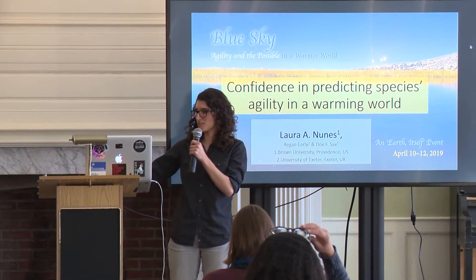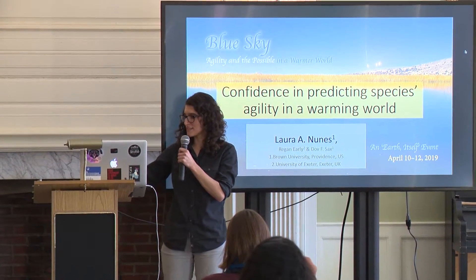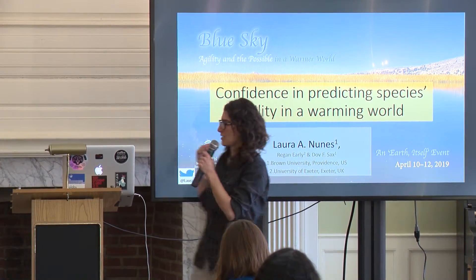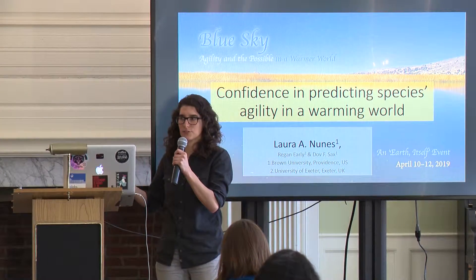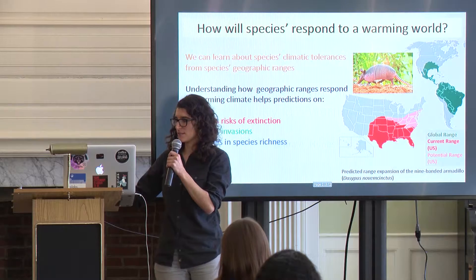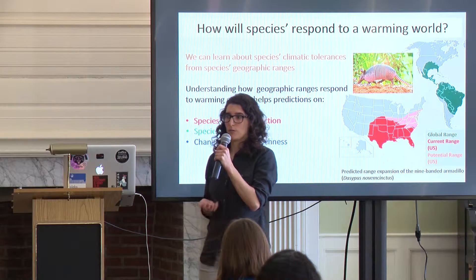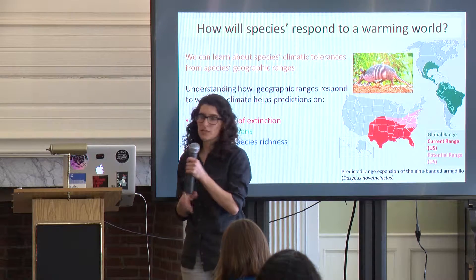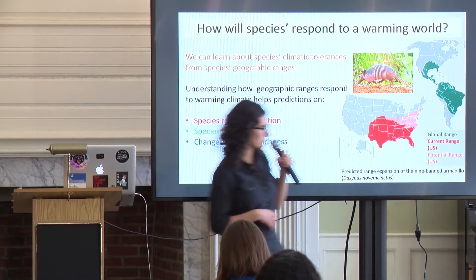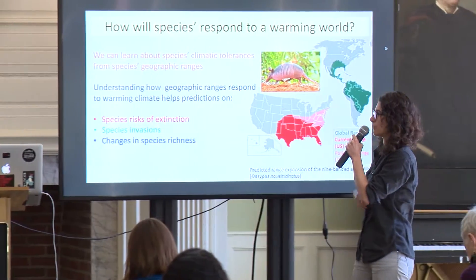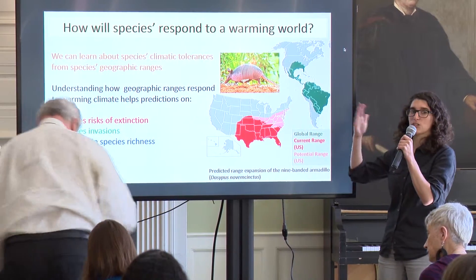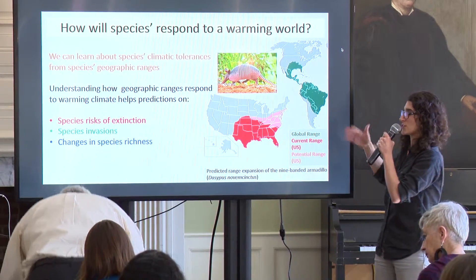I'm Laura and I'm a postdoc with Dove Sachs. When I think about this topic of agility and possible futures in a warming world, I think about species and how they will respond to a warming world. As a biogeographer, we tend to think about species' geographic ranges, how they're distributed in the landscape, and how those distributions might shift with changes in climate.